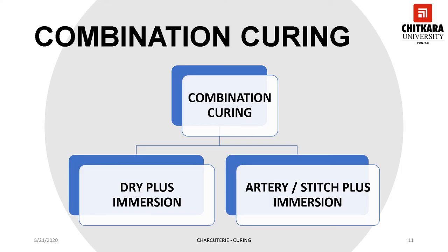This slide explains combination curing. A combination curing is a method which involves a combination of both wet as well as dry curing. Often used to cure hams, this method shortens the curing time and reduces the risk of spoilage because the process takes place inside and outside the ham. Combination curing is a very popular method as it drastically cuts down processing time and is generally preferred by commercial units. It can be of two kinds: first, dry plus immersion; second, artery plus immersion method.